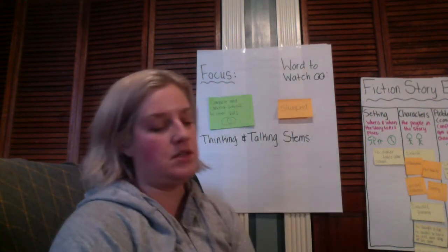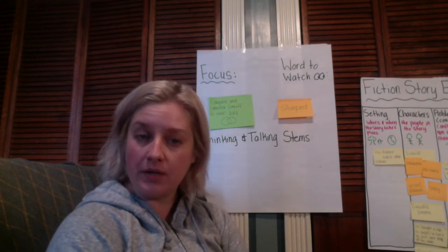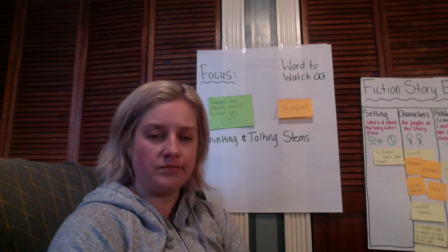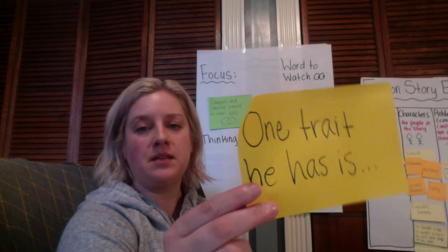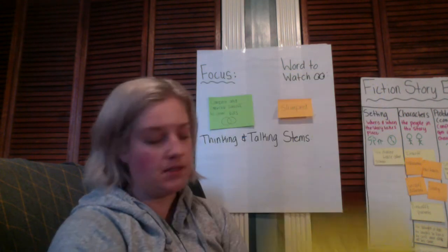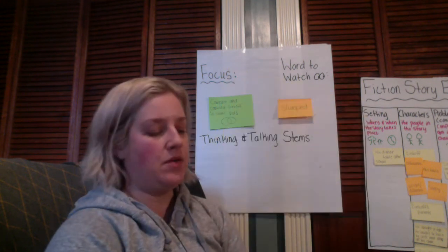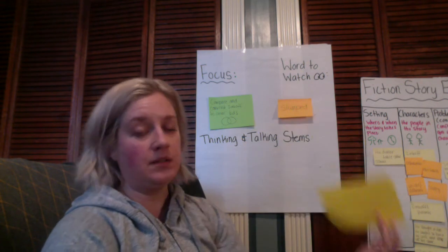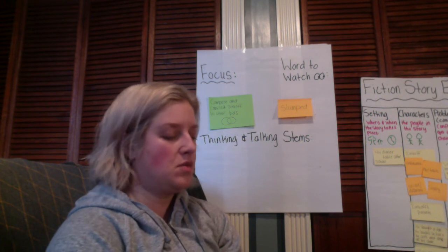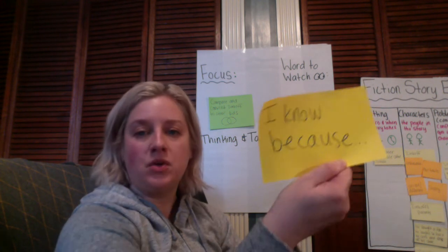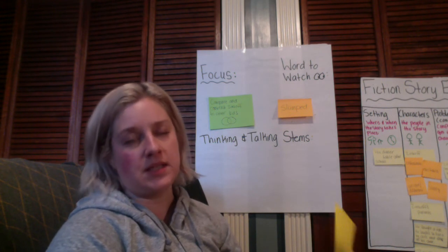The sentence starters that you will notice me using — which I will have you use for a flip grid, a quick two-minute assignment that you'll have to do when you're done with this — you'll hear me saying things like 'one trait he has is,' followed by evidence, 'I know because.' And remember, when we give a character trait like lazy, sloppy, excited, or sick, we always want to back it up with at least one piece of evidence from the text: something that the character did, said, or thought.